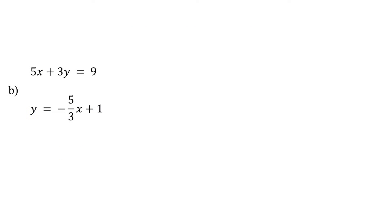In the previous example, both equations were in slope-intercept form, making it easy to directly identify their slopes and y-intercepts. However, in this example, the first equation is in standard form. In this case, first convert the standard form to slope-intercept form by isolating y.